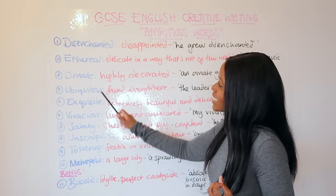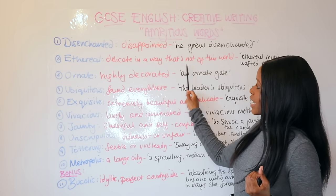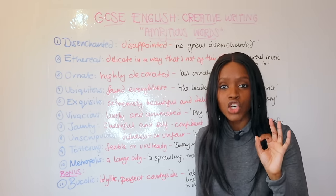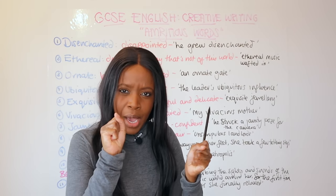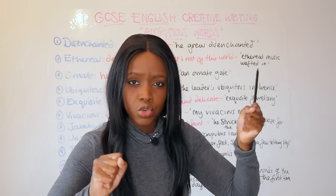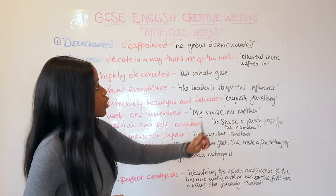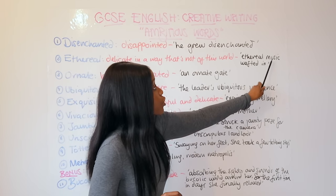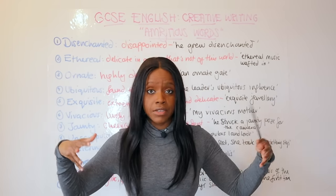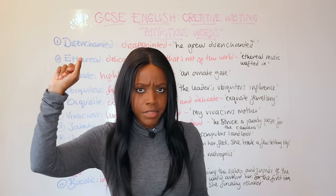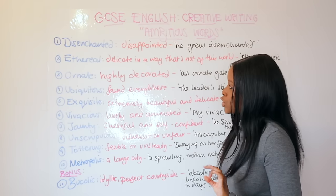The second word is 'ethereal,' which simply means something that is very delicate in a way that's not of this world — a delicate beauty that also seems supernatural and otherworldly. For example, you can talk about how the ethereal music wafted into the great hall, or if you're in a forest and you hear distant ethereal music. That's really powerful, ambitious language.